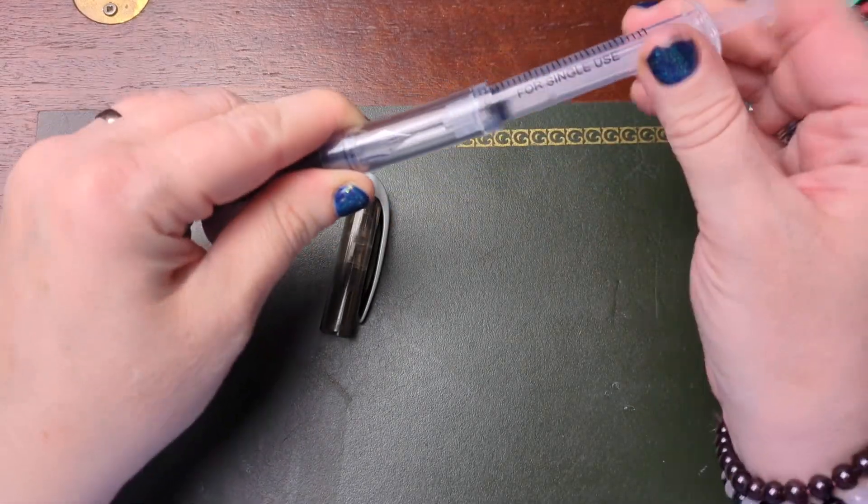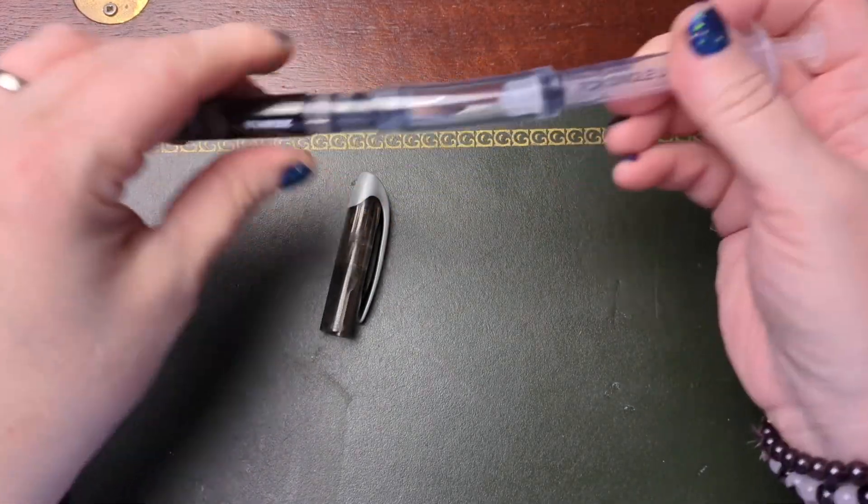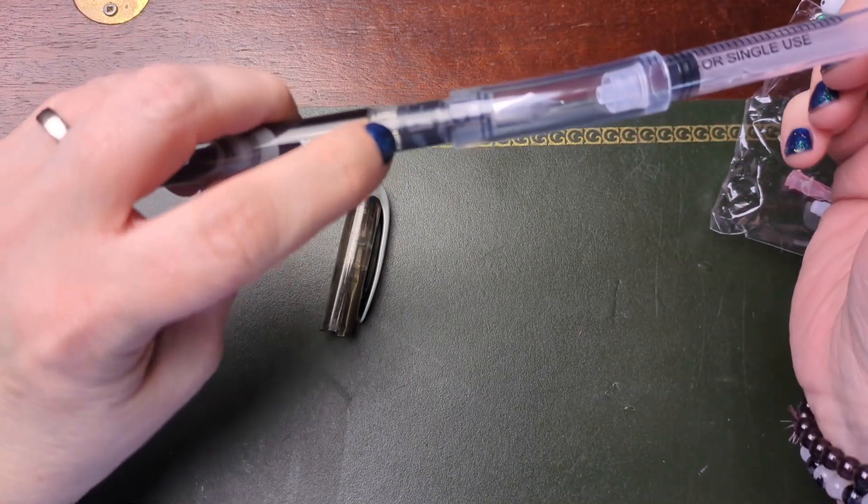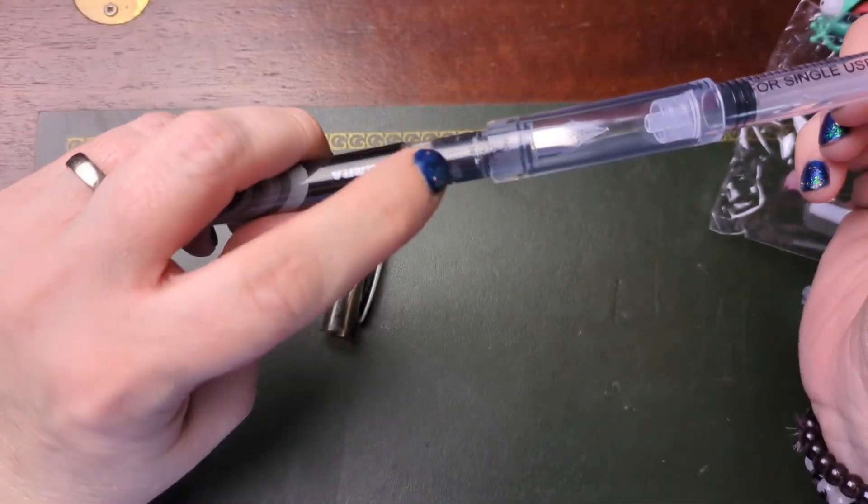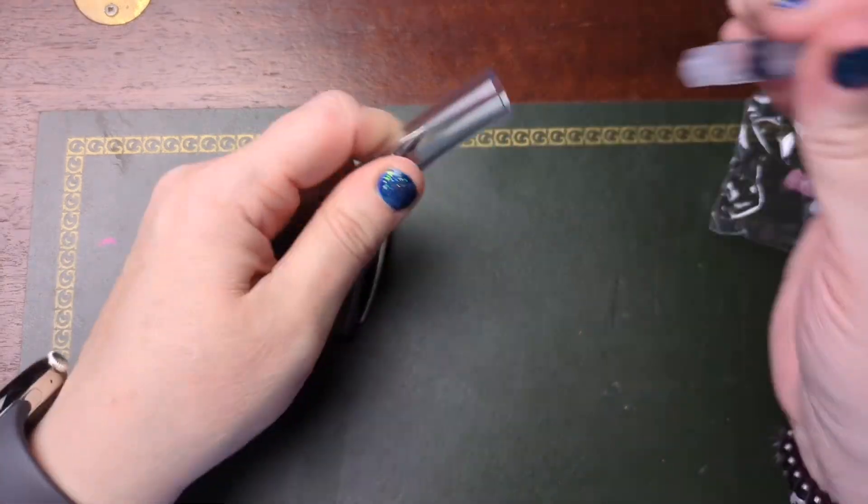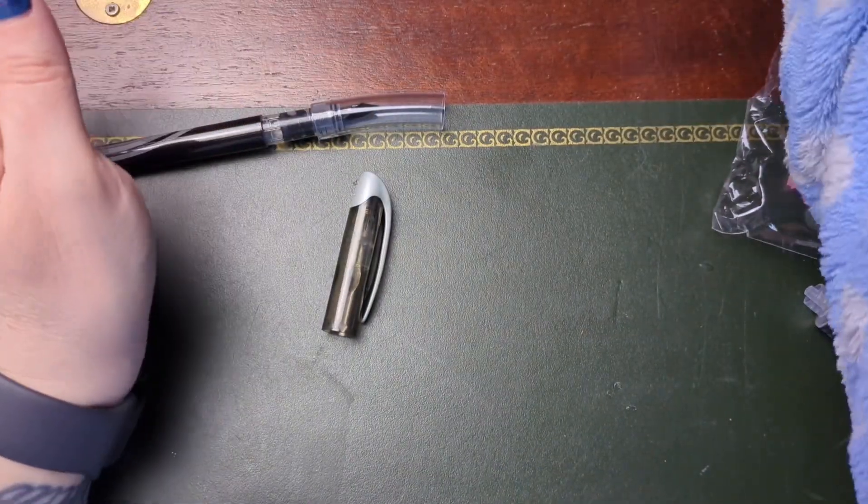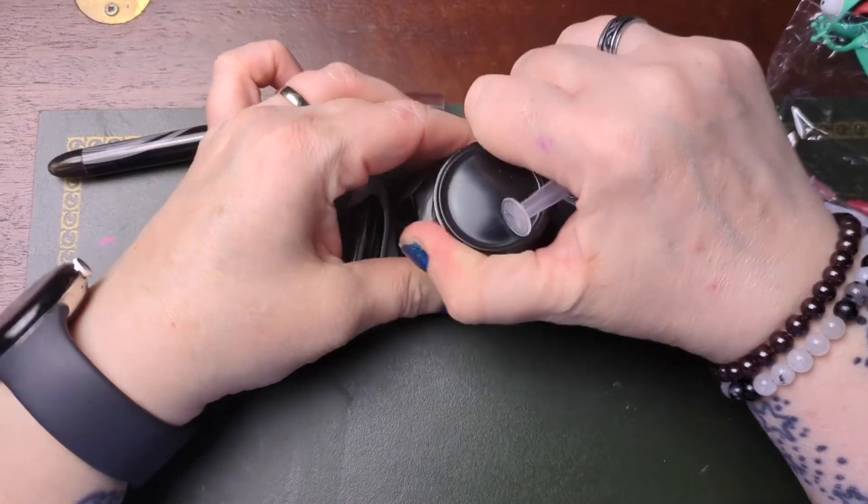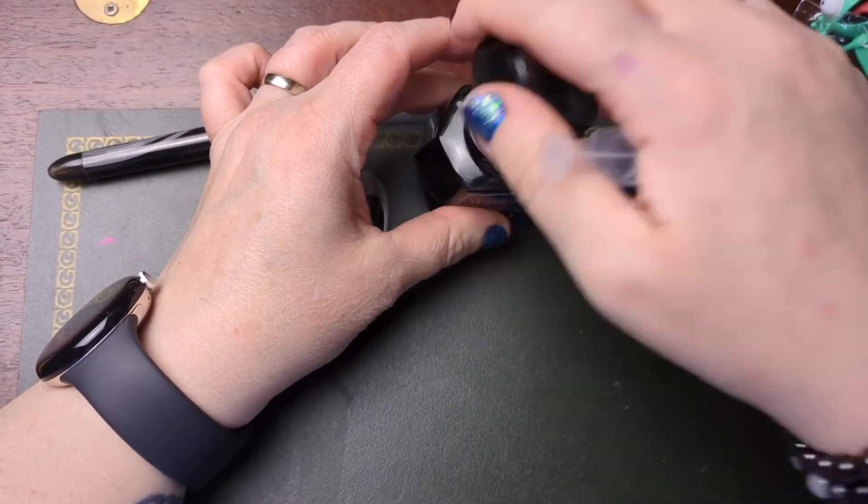And what we're going to do is we're going to use vacuum to suck the ink. As you can see, the vacuum is working because it's sucking the ink up the pen. So I'm just going to release that vacuum and I'm going to get my ink that I'm going to use.